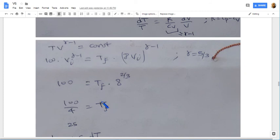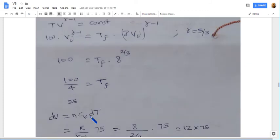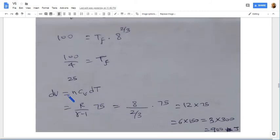So from this we get the final temperature as 25 kelvin. And the change in internal energy is nCv dT. dT is 100 minus 25 which is 75. I am putting the value of R. And Cv is R by gamma minus 1. And n is 1 because it is one mole of gas. So we get the change in internal energy as 900 joules.